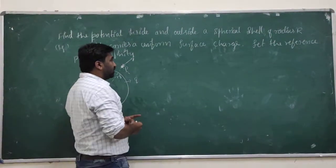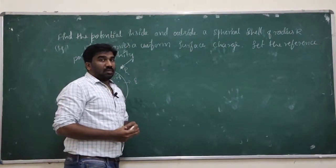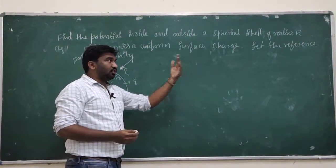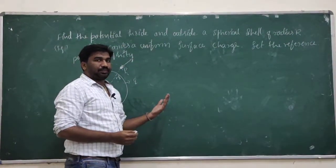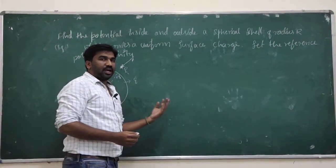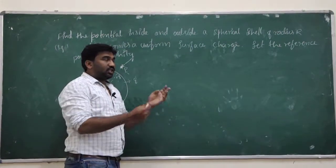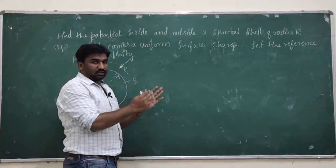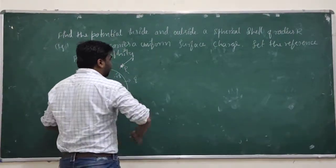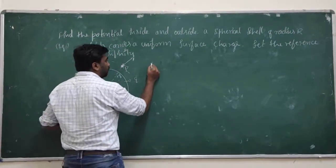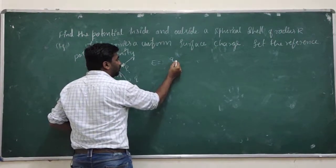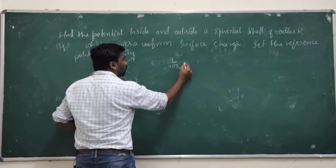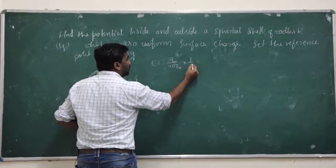By the definition of potential, we know that it is the amount of work done to bring a test charge from infinity to a given point, or from reference to a given point. At each position, for every displacement we have to do some work. We know that by Gauss's law, E is equal to q divided by 4 pi epsilon r, multiplied by 1 over r squared.